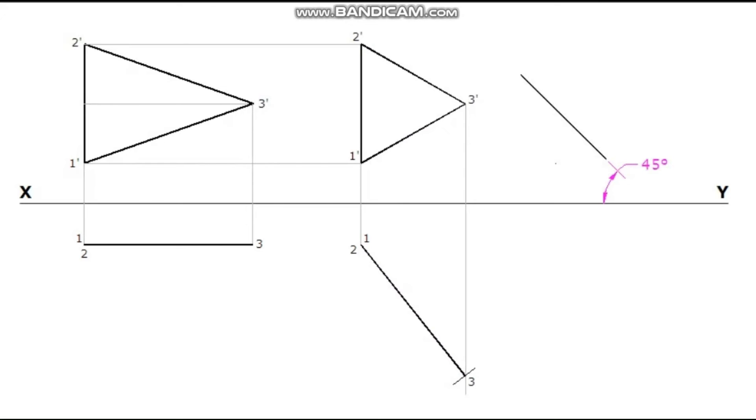In the third stage, edge of the triangle is 45 degrees inclined to HP. So draw a 45 degree incline line. Reconstruct the third stage elevation with respect to this incline line. Project all these corners. Project the points from the second stage plan. Find out the corresponding intersection of points. Join these points with straight lines.